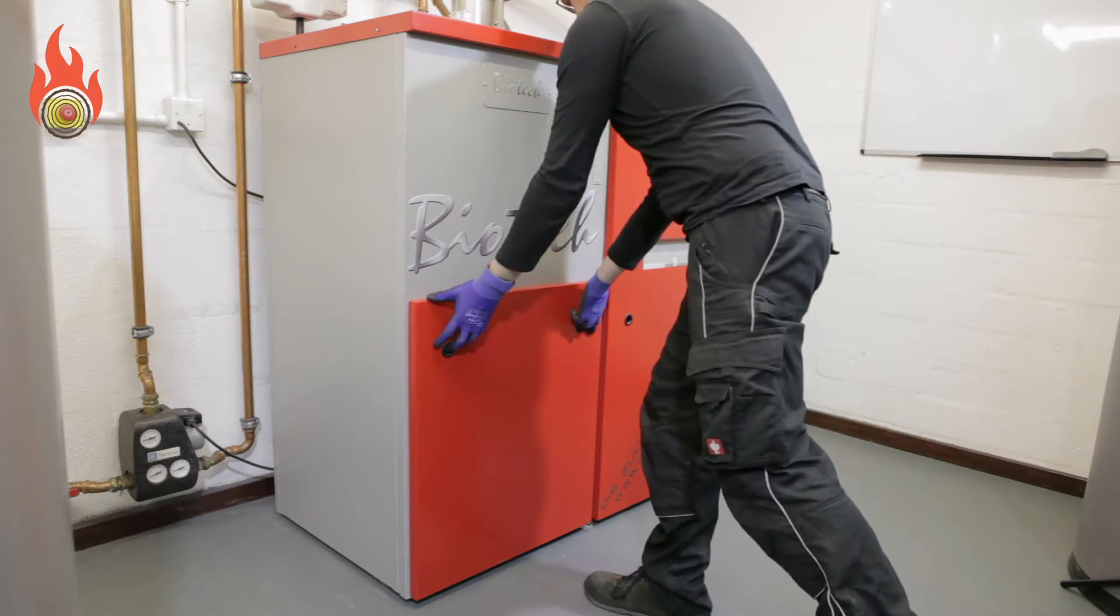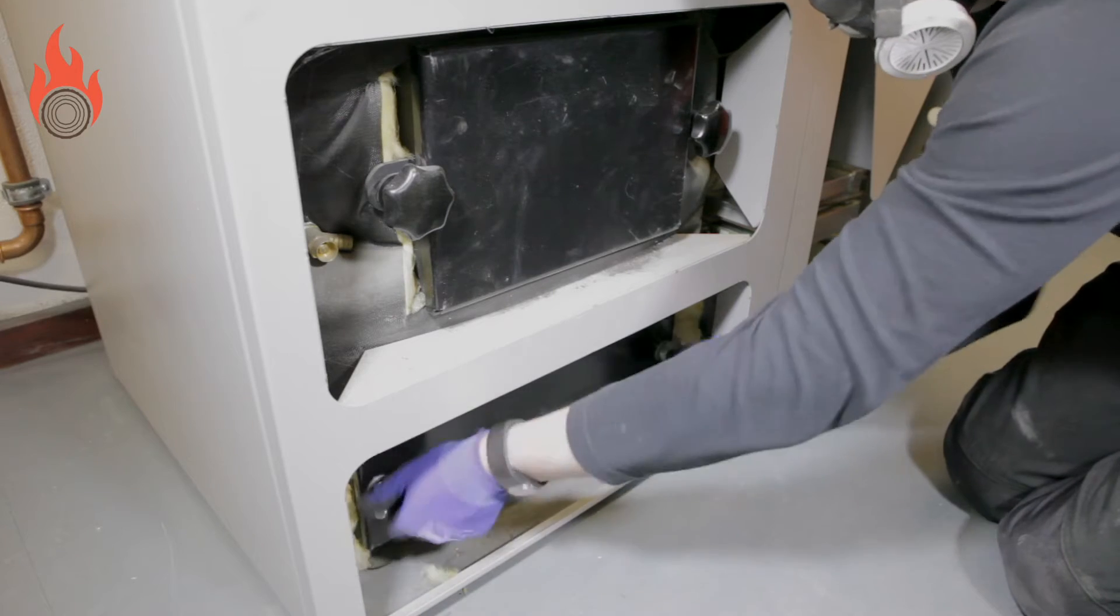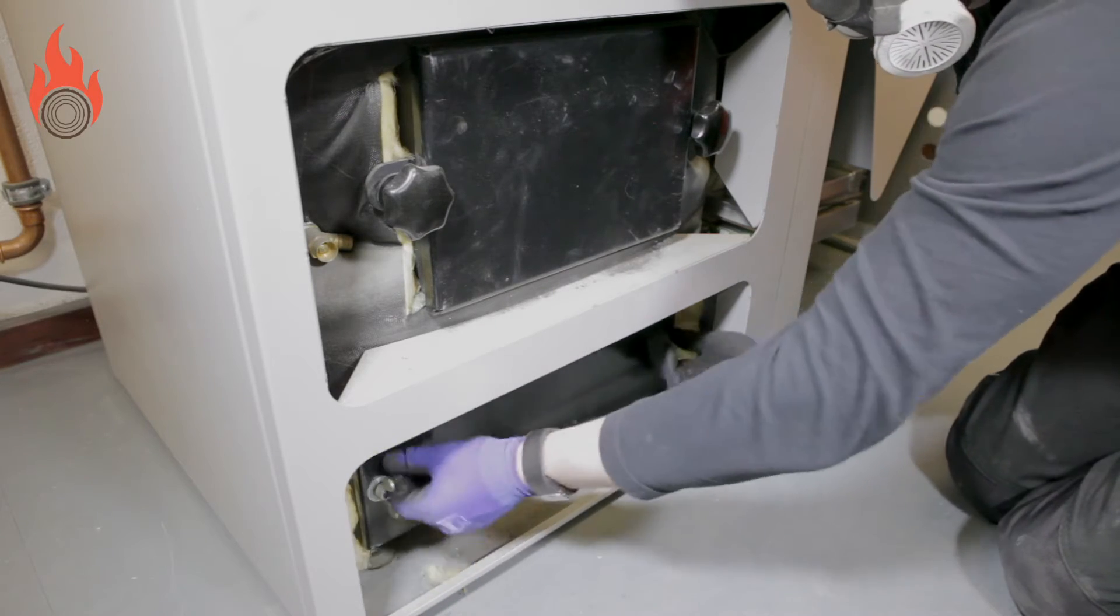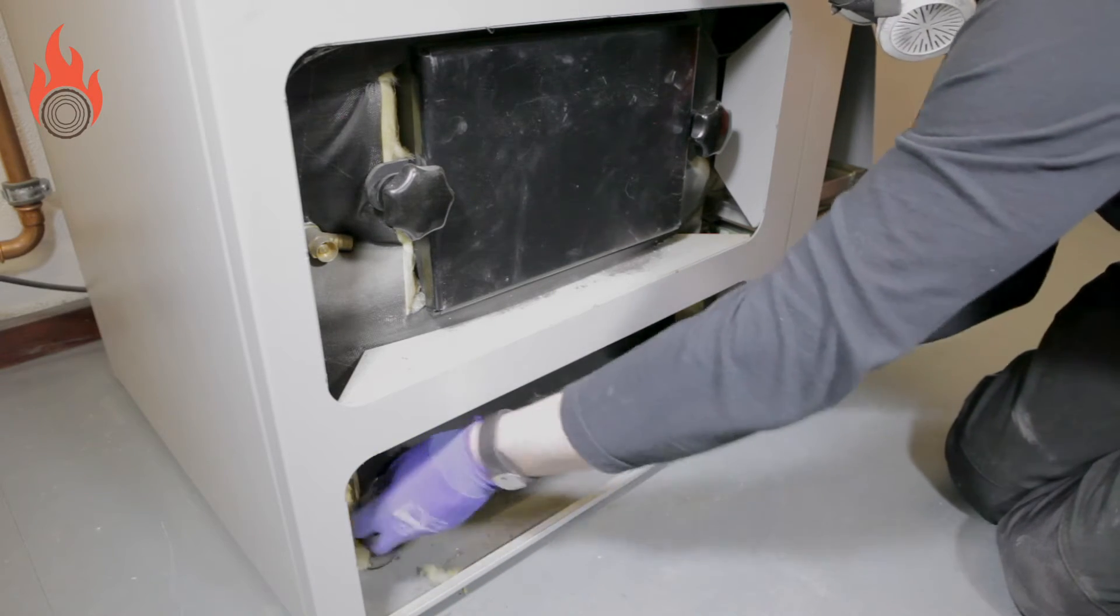We will now move down to the combustion chamber and ash tray. If you now use the boiler screen to open the burner grate, then any debris will fall down into the ash drawer underneath.